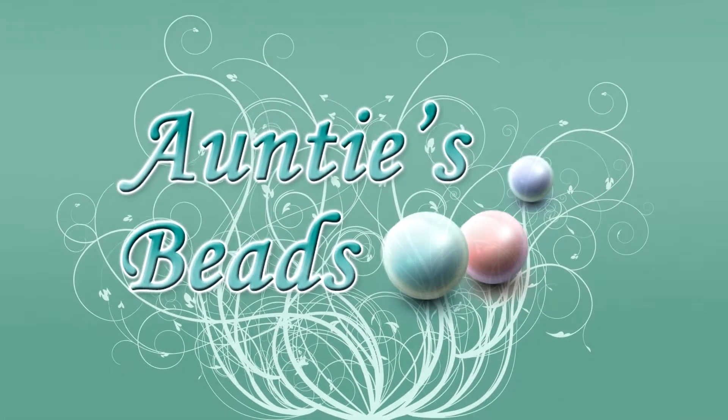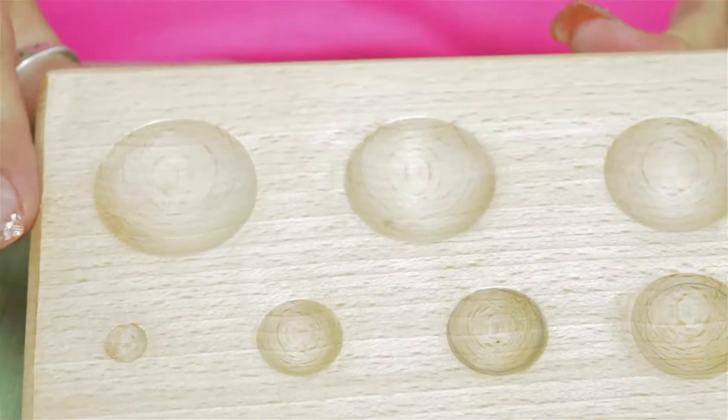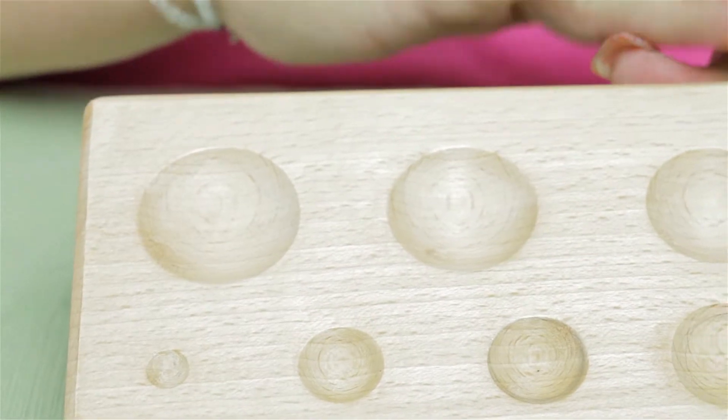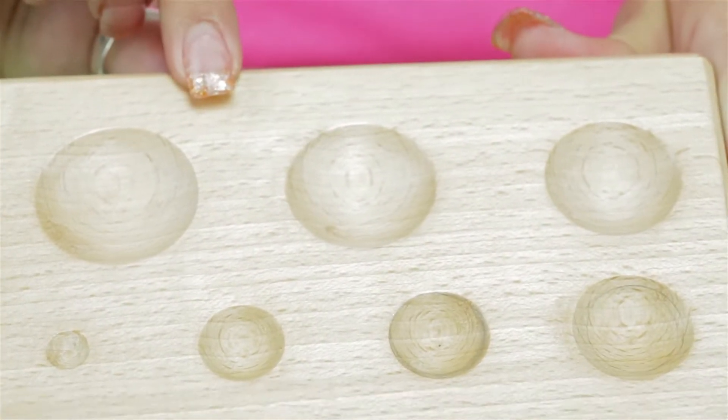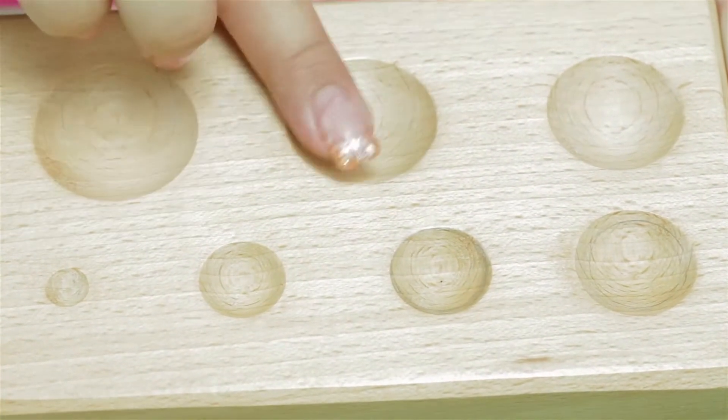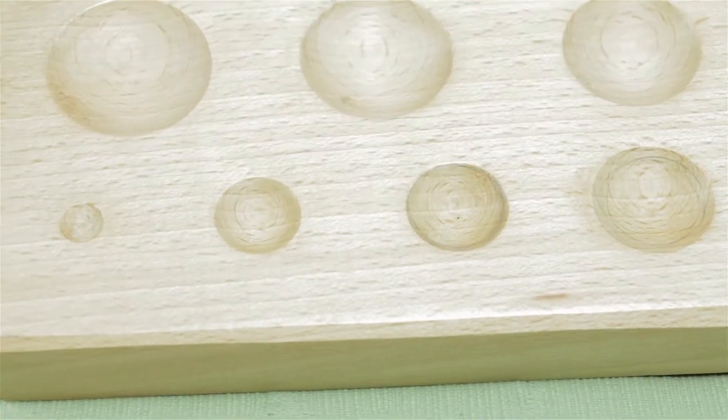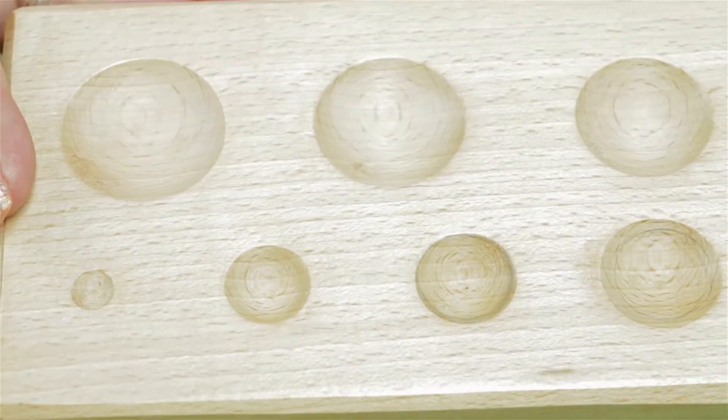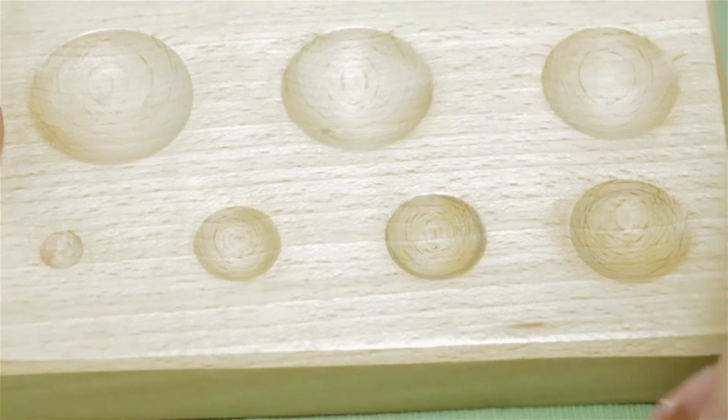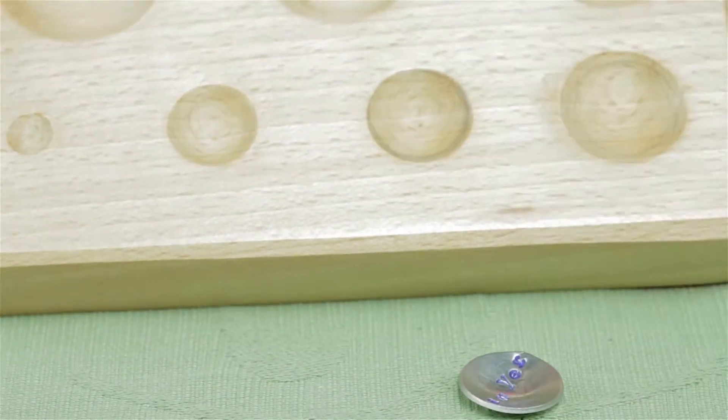This is a wood dapping block round. This dapping block is different from the metal punch set. This has a more shallow indention to make pieces that are just a little more domed and not quite as deep as when you use the metal one.